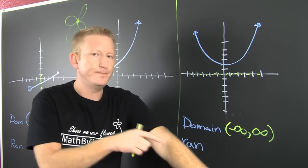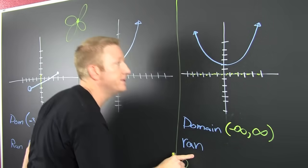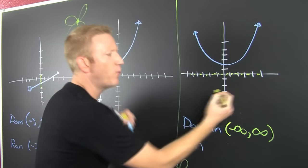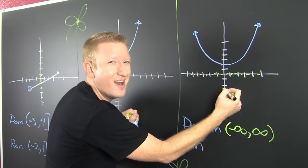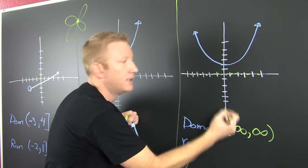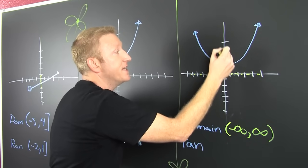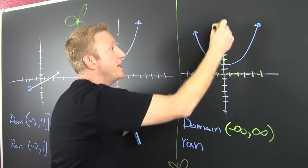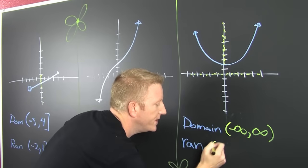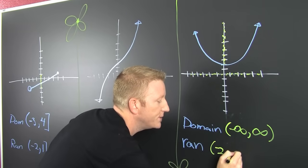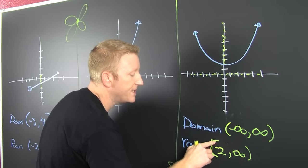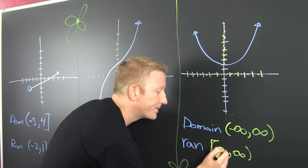The range is the set of all y values. Checking the graph: values below 2 are not represented, but everything at 2 and above is. So the range goes from 2 to infinity. We include the 2 because it is included in the range, giving us the interval from 2 to positive infinity, closed at 2.